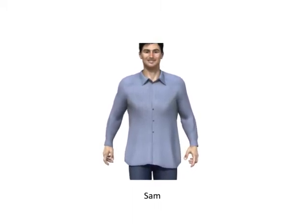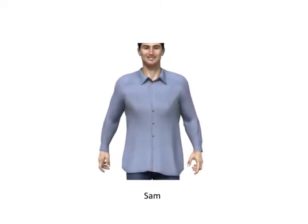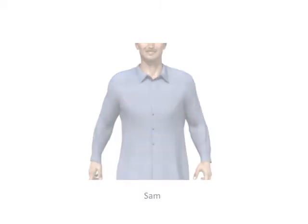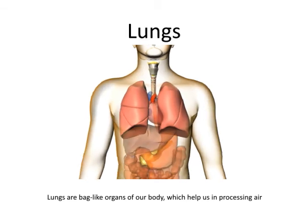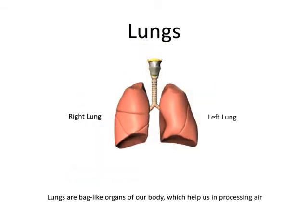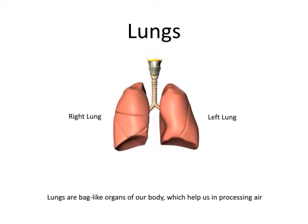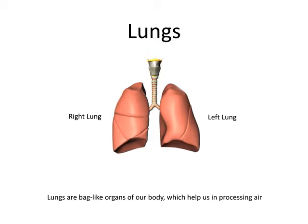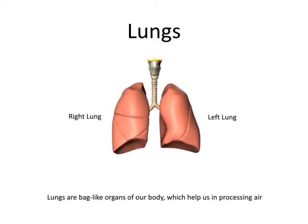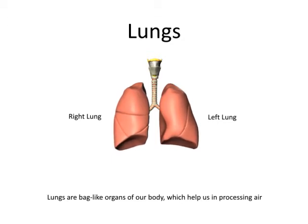Food and water go into our body through our mouth. But what about air? How is it processed? Lungs are bag-like organs of our body which help us in processing air. We have two lungs, one on each side of the chest. Lungs expand and contract as we breathe in and breathe out air. You can clearly make out these movements in the given animation.